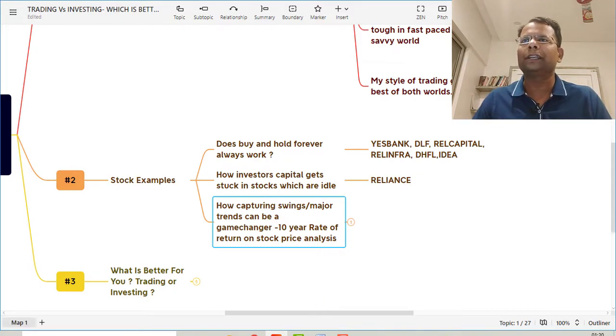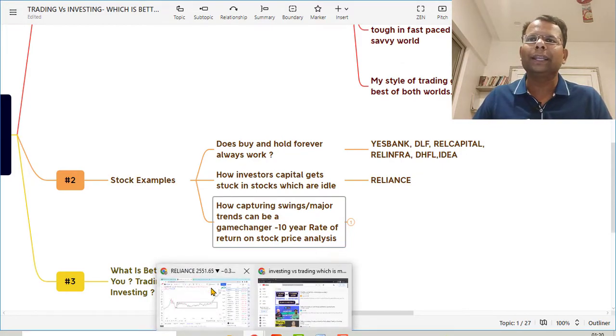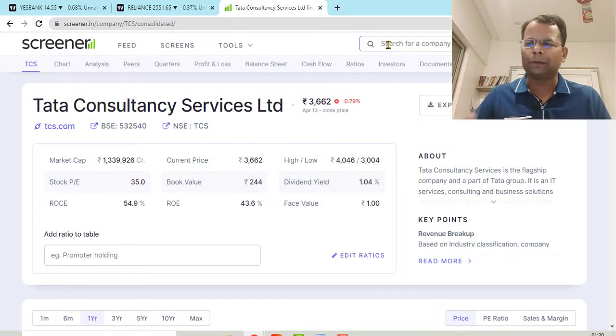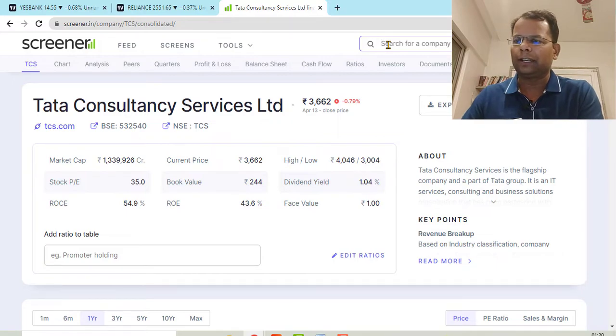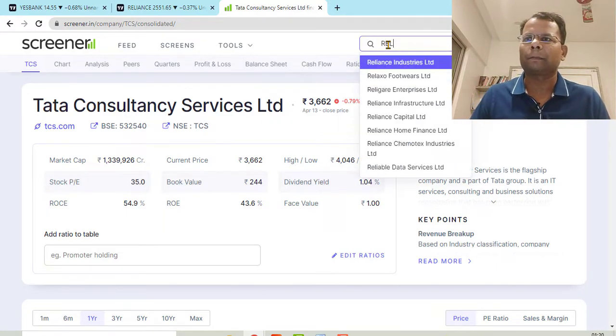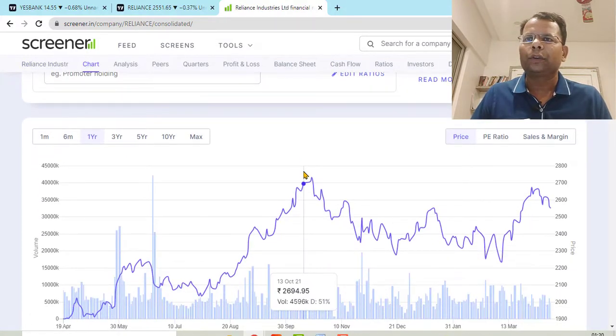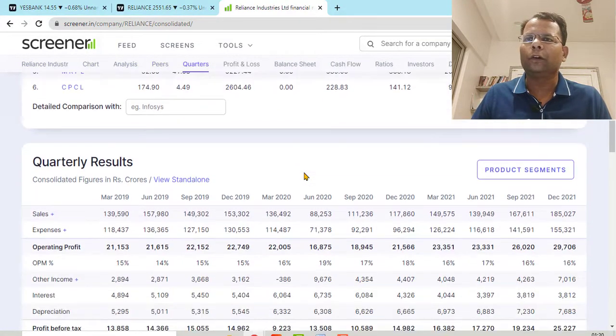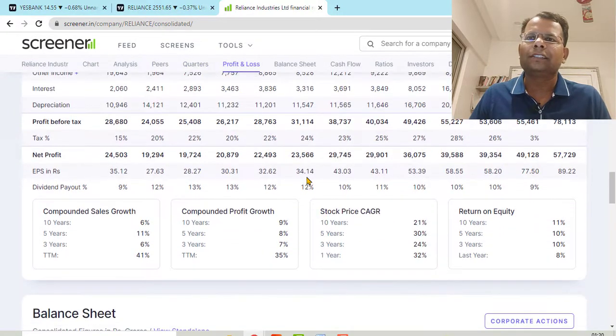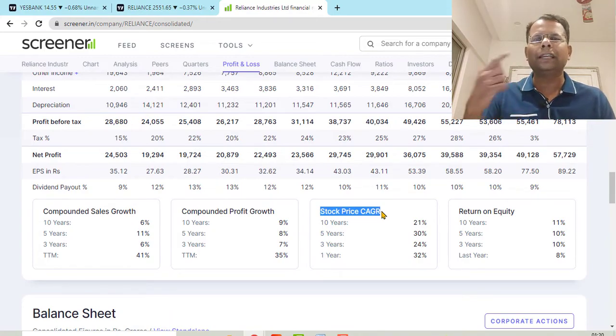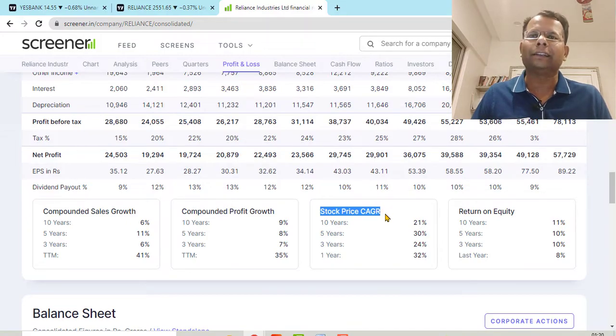And if you don't believe it, we are going to see practically. I'm going to show you a website called Screener where you can get this idea. Let's say Nifty 50 companies, let's take a few examples. Reliance Industries, this is a Nifty 50 company. And here you can look for what is this stock price CAGR, which means compounded annual growth rate. So how much annual rate of return this stock has generated for 10 years?